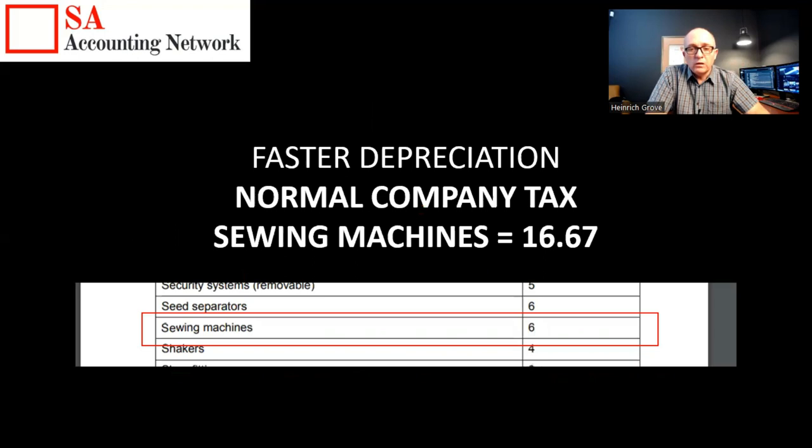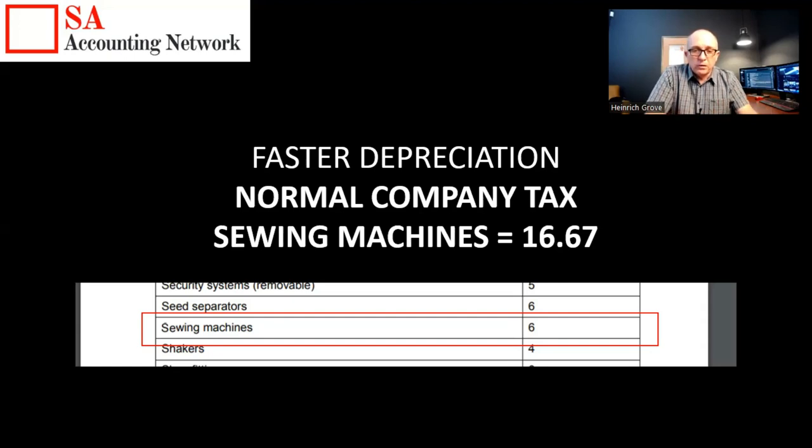The second benefit is faster depreciation rates. The Receiver of Revenue has guides, and for every type of asset you can imagine having in a business — calculators, computers, air conditioners — they prescribe which depreciation rates to use. The depreciation write-off that we put through the financial statements and the tax calculation lowers the tax you have to pay because it brings your taxable income down. For example, if you've got a small manufacturing business with sewing machines, the tax guide says you must depreciate them over six years.